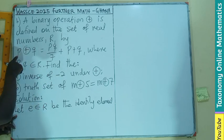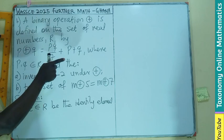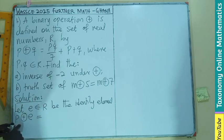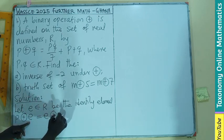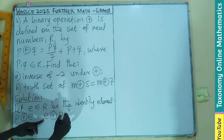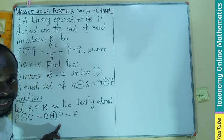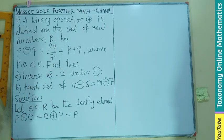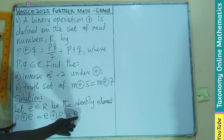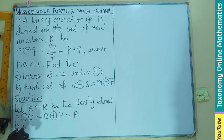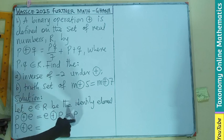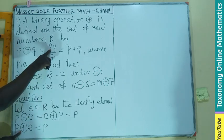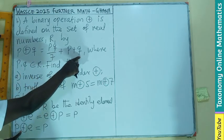If e is the identity element, then when any element p is operated on by e, we should get back p. Similarly, when e is operated on by p, we expect to get p. That is how the identity element is derived. So we pick p ⊕ e = p, and apply the definition: multiply the two numbers, divide by 7, then add the first plus the second.